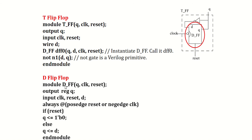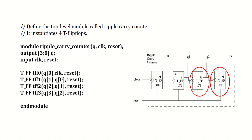The D flip-flop module is named D_FF with output Q and inputs clock, reset, and D. Output Q is declared as a register since this is behavioral description. Using always at the positive edge of reset or negative edge of clock: when reset is high, Q equals 0; otherwise Q follows input D. Using this D flip-flop as an instance we create the T flip-flop, and using the T flip-flop we build the ripple carry counter. In the next video I will explain how to write the testbench to simulate this.